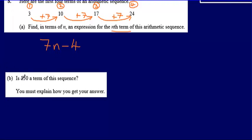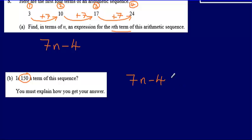For part B, we're asked: is 150 a term of this sequence? You must explain how you get your answer. The easiest way is to say that if 150 is a term in the sequence, then I can multiply a number by 7, take away 4, and it will give me 150 — simply because when substituting integers 1, 2, 3, 4 to get each term, to get the fifth term I'd do 7 times 5 minus 4. So if I can substitute a number into 7n minus 4 and get 150, then 150 must be in the sequence.